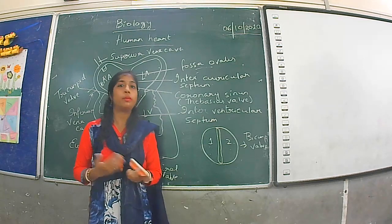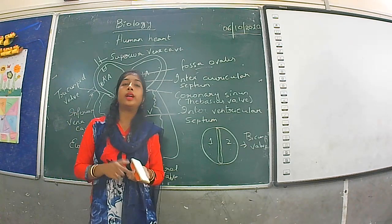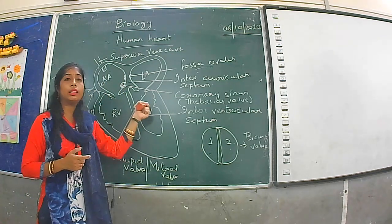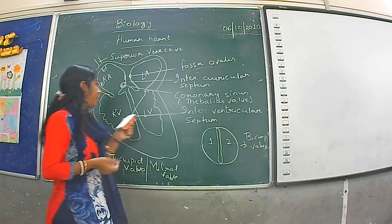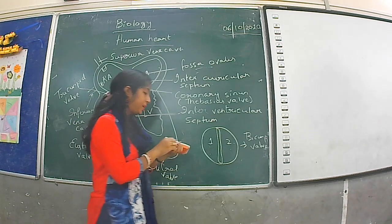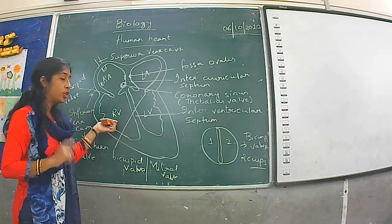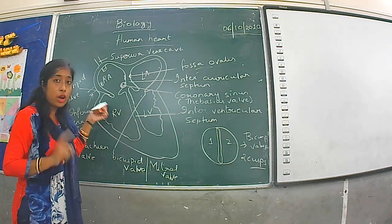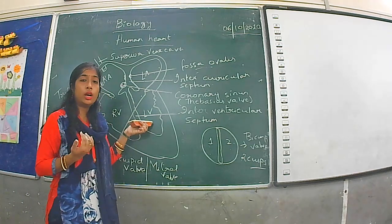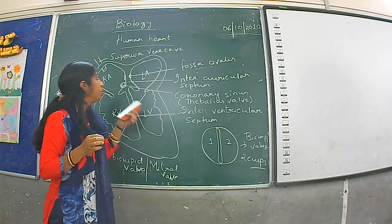The difference between the tricuspid and bicuspid valves: the tricuspid valve is located at the right auriculo-ventricular junction with three cusps, while the bicuspid valve is at the left auriculo-ventricular junction with two cusps. The tricuspid valve prevents backflow of deoxygenated blood to the right auricle, while the bicuspid valve prevents backflow of oxygenated blood.